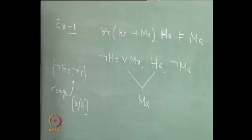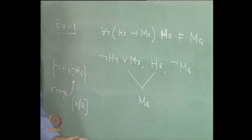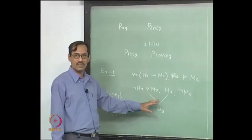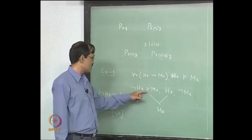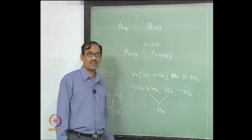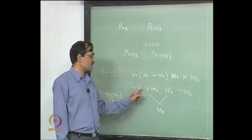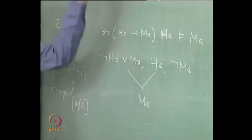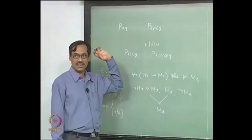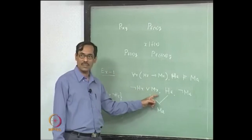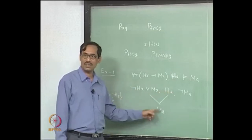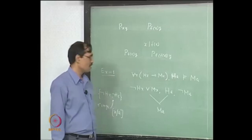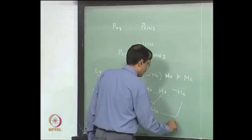It unifies not h(x) with h(a). It computes sigma as the MGU of this set. Then it sees that x by a is the substitution. Now it applies the substitution and takes the resolvents. Once the substitution is applied, this is not h(a), m(a) and h(a) — so the resolution gives m(a). So all this is done in one step: apply the most general unifier and then resolve. That whole thing is called resolution. It is just like propositional resolution, but before it, we should apply the most general unifier. The MGU of not h(x) and not h(a) gives x by a, which corresponds to universal specification. This gives not h(a) or m(a), from which you conclude m(a). Then not m(a) and m(a) resolve to give bottom.